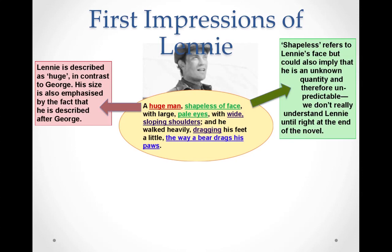The next point: he's described as shapeless of face with large pale eyes. Remember we spoke about how George was defined and had quite strong features. Well Lenny is the opposite — he's a bit of a blob of a character and at first he doesn't seem to have a lot of depth to him. Whereas with George you see mood swings and an edgy quality, early on Lenny seems quite docile. He can have a bit of a sulk and be quite manipulative, but he's almost like this massive, shapeless presence. 'Shapeless' could also imply that as a character he's an unknown quantity and quite unpredictable. We don't really understand Lenny until the end of the novel, when a darker side of his character comes to the fore — which is quite disturbing.